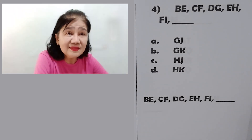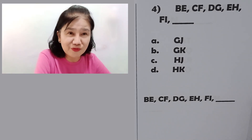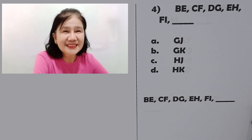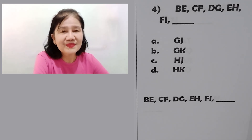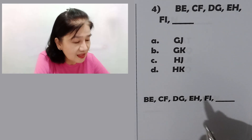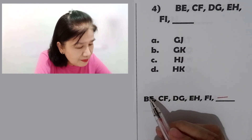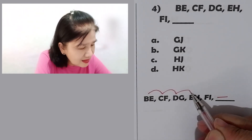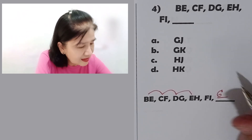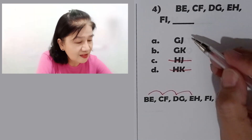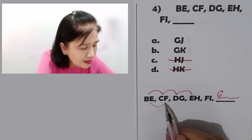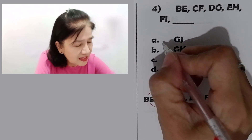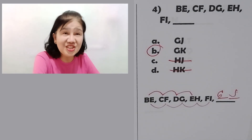Problem number four — two letters again. I'm giving you seconds to answer problem number four. Go! Okay, shall we discuss? First position: B C D E F G. Remove letters C and D — you only have two choices now. Second position: E F G H I J. So the answer is letter B: G J. Did you get it?